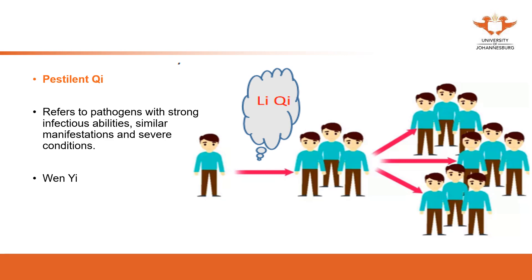Each of the six exogenous pathogens has specific characteristics. Pestilence Qi is actually a group of pathogens — not just one, but a group. However, this group of pathogens shares similar characteristics, that's why we put them in one category: Pestilence Qi.